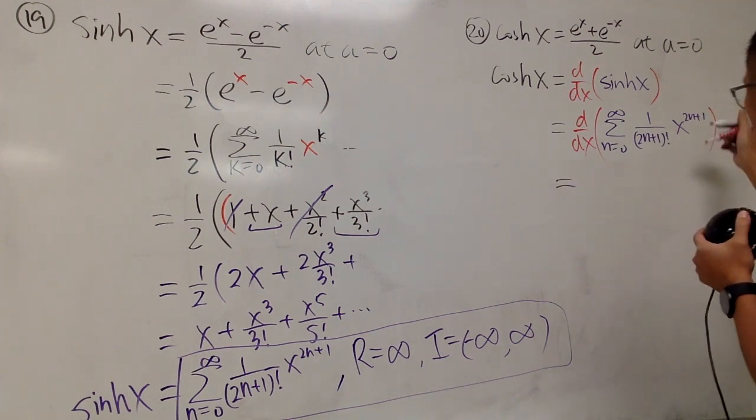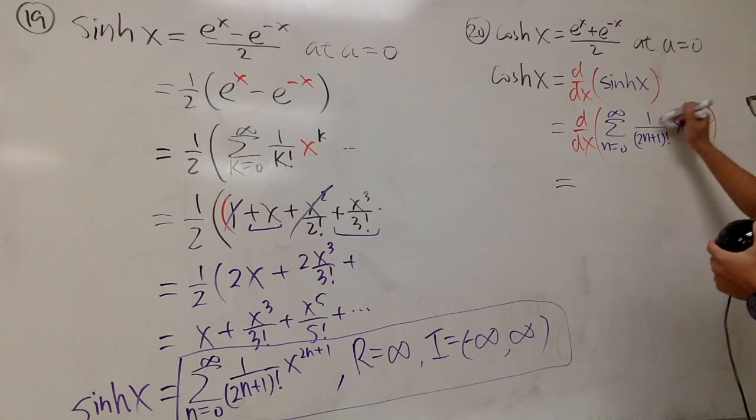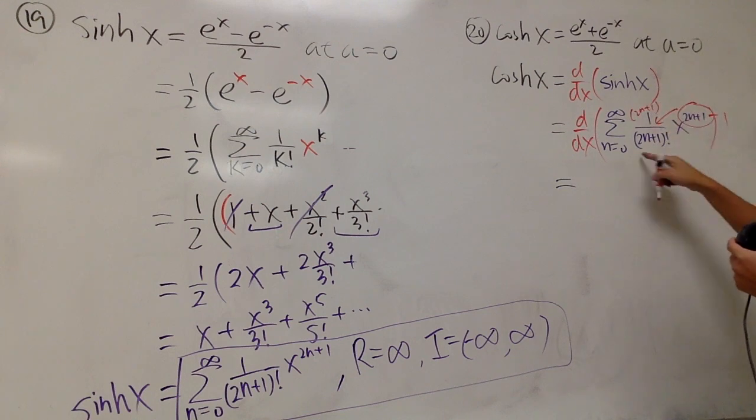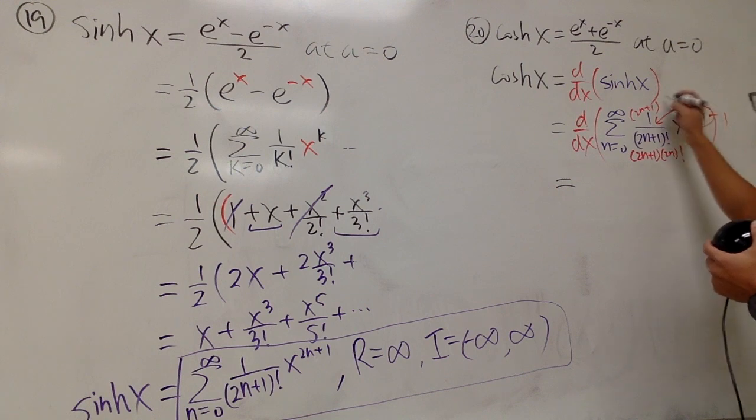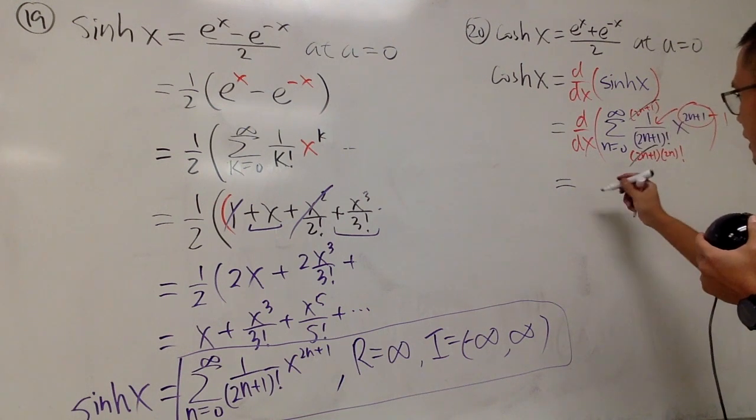This right here is equal to, well, do the derivative, bring this to the front, minus 1. So you are looking at 2n plus 1. Break this down. This is 2n plus 1 times 2n, and then so on. So you can factorial this, so this and that will cancel. And in the end,